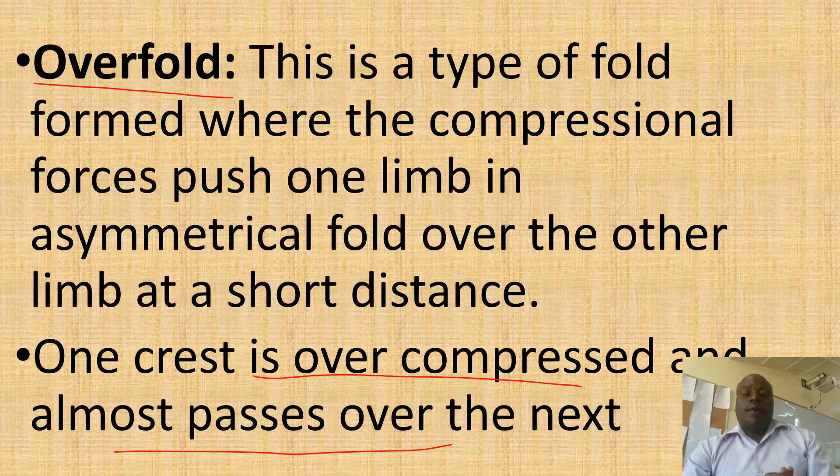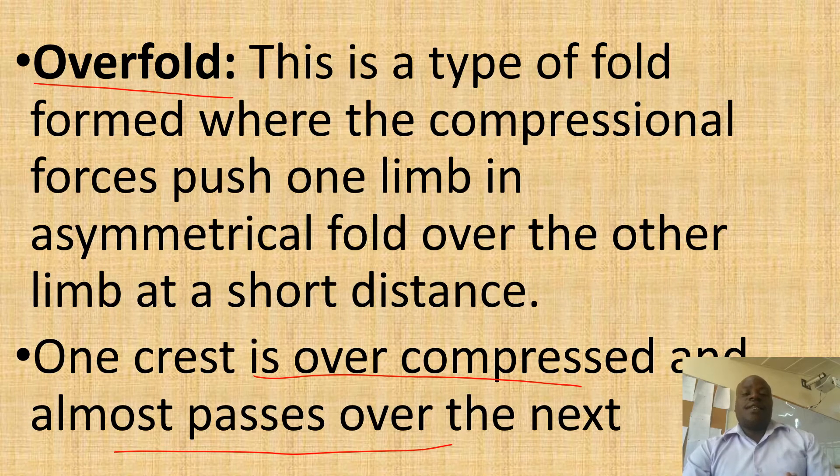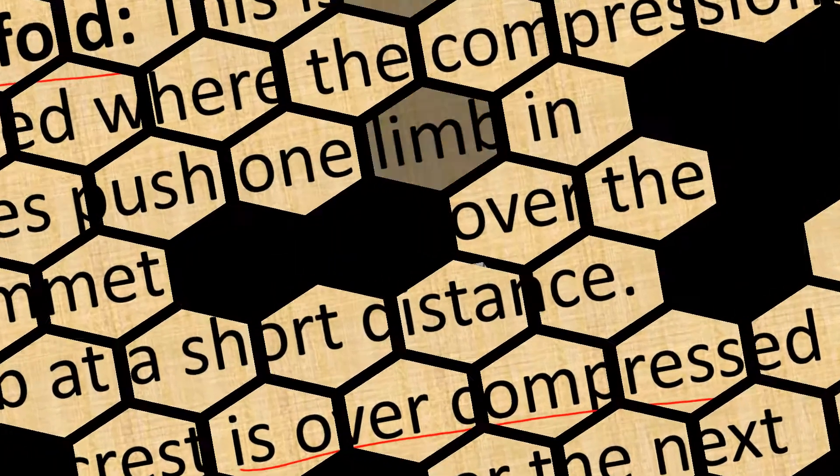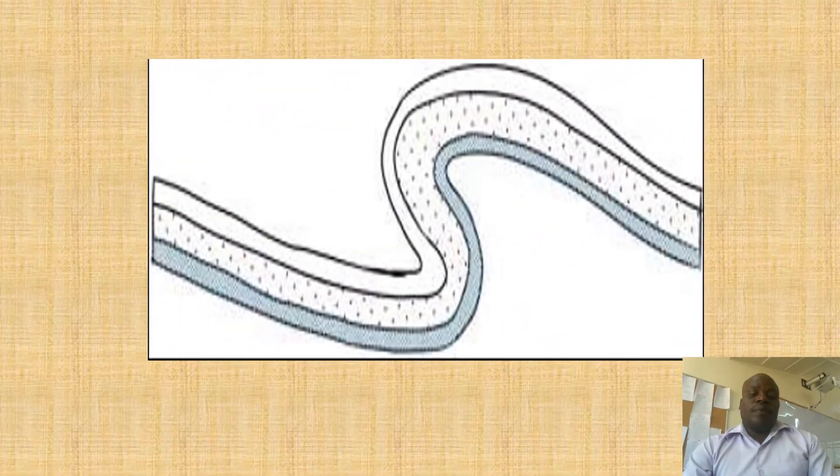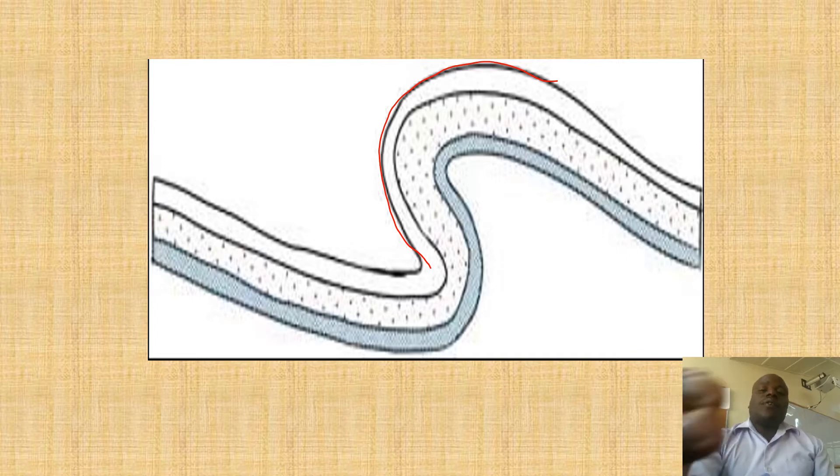One crest or one rim of the fold is too much compressed to the extent that it almost passes over the next. This is one crest which was too much compressed and it almost slips over the other.